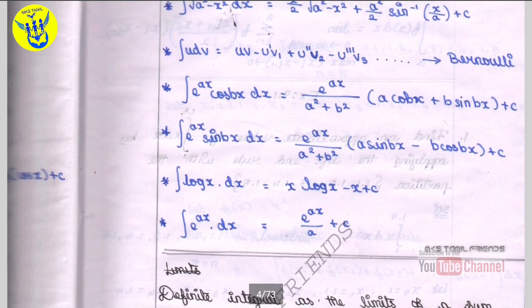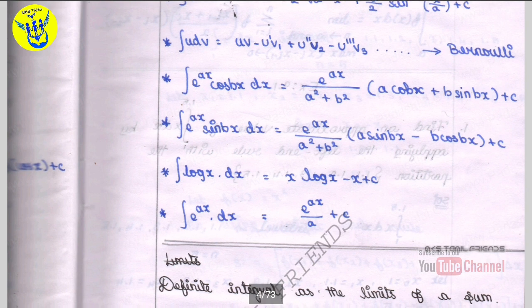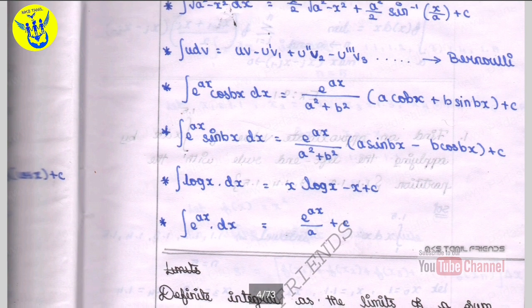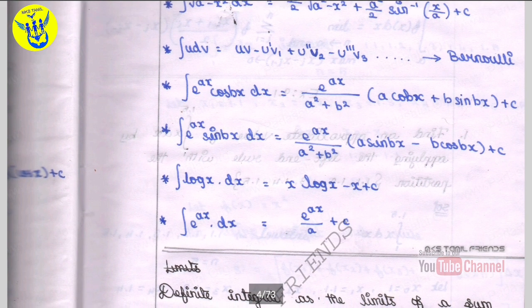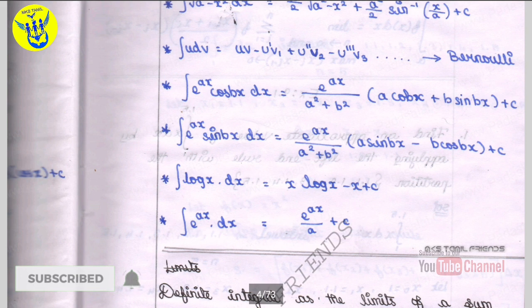Integral log x dx is equal to x log x minus x plus c. Integral e power ax dx is equal to e power ax by a plus c.